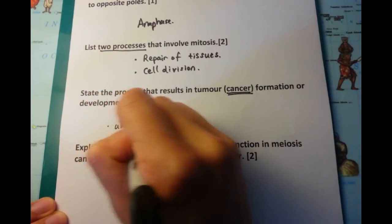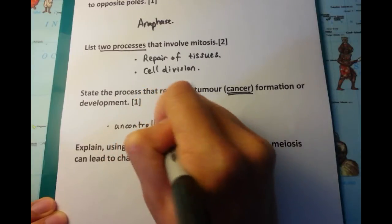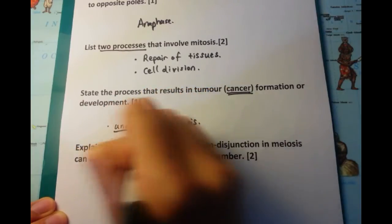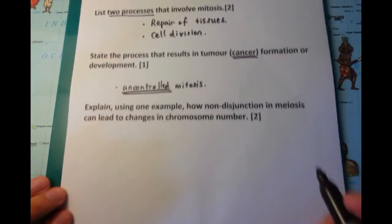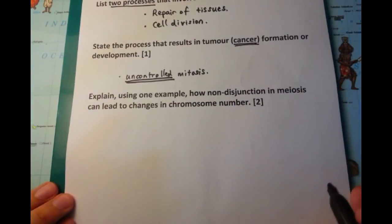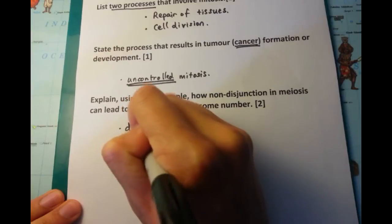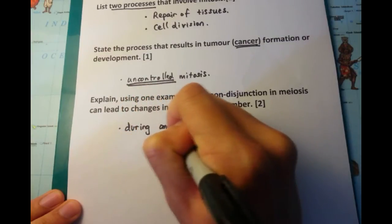Now, state the process that results in tumour or cancer formation. Yes, that results in tumour or cancer formation. And this is mitosis, obviously, but the key to know is that it's uncontrolled mitosis.